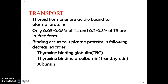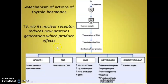Regarding transport, thyroid hormones are largely bound to plasma proteins. Only 0.03–0.08% of T4 and 0.2–0.5% of T3 are in free form. Binding occurs to plasma proteins including thyroxine-binding globulin, thyroxine-binding prealbumin, and albumin. This is how T4 is utilized for regulation of growth, CNS function, BMR, metabolism, and cardiovascular functions.